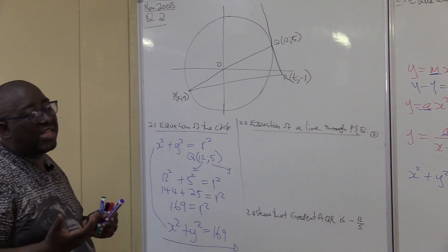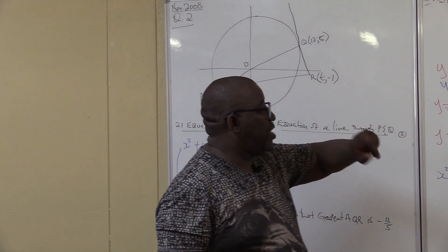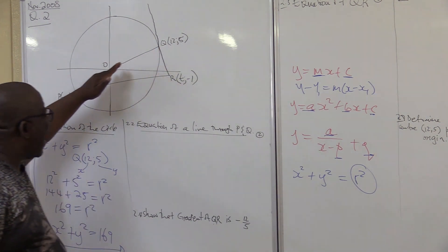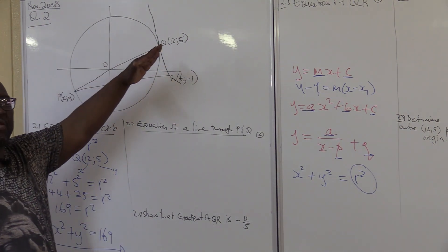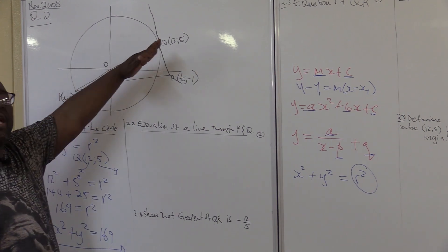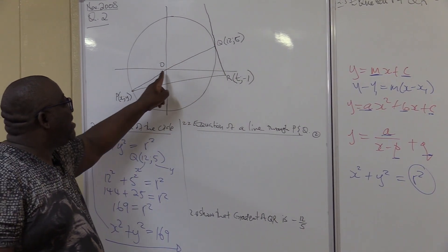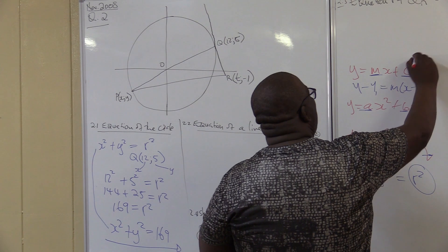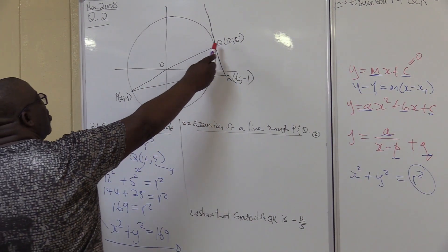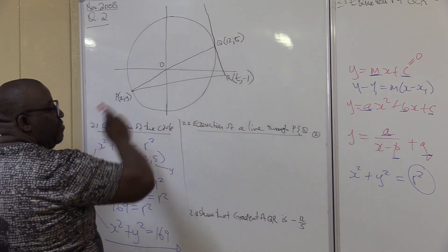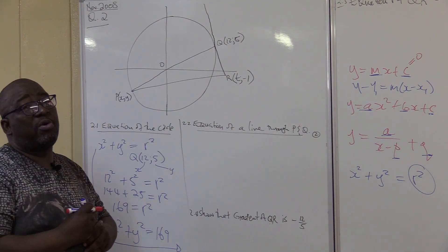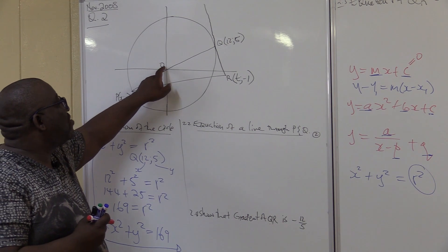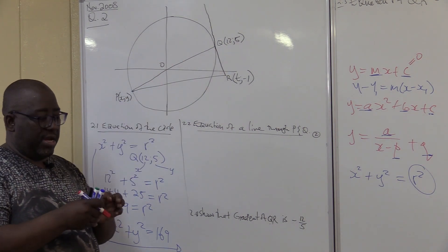When looking for the equation of a straight line, we are looking for the gradient and the y-intercept. In this line, I can easily see that the y-intercept is at zero — the graph cuts the y-axis at zero. So we already know that c = 0. The gradient will be positive, and I need two points to use m = (y₂ − y₁)/(x₂ − x₁).